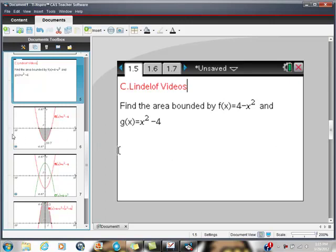I want to make sure you guys that we don't get fooled here. So, if you don't mind, take out your calculator and write down this problem. Find the area bounded by the function f(x) equals 4 minus x squared and g(x) equals x squared minus 4.